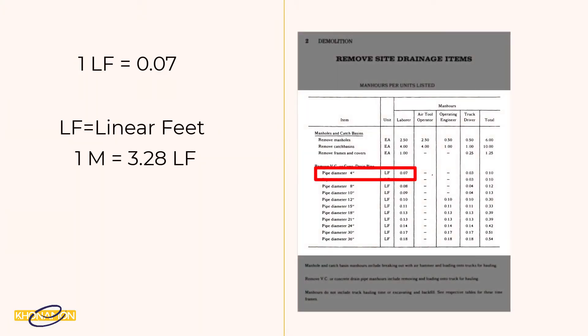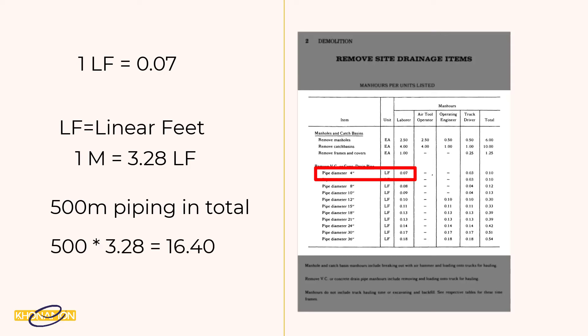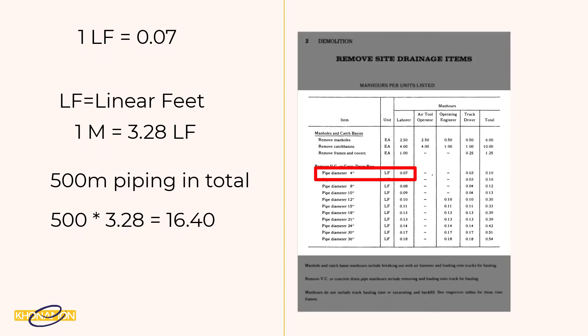For example, we have 500 meters of 4-inch pipe diameter in total. I multiply 500 by 3.28 and get 1,640 LF. Now, for a total of 1,640 LF, how many man-hours are needed? Simply multiply 1,640 by 0.07 — it is 114.8 man-hours.